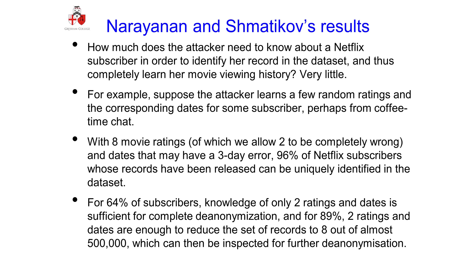With eight movie ratings, two of which can be completely wrong, and dates that may have a three-day error, 96% of the Netflix subscribers in that training data set could be identified. And they could work that out just by doing a probabilistic analysis. I've given the reference to the paper — it's only 10 pages long, you can see how they did it.